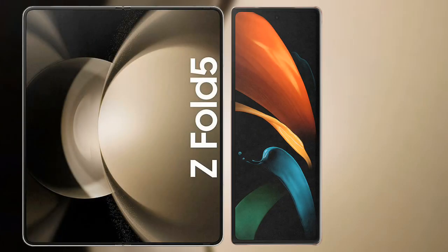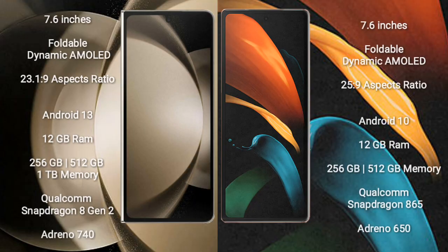Comparing the Samsung Galaxy Z Fold 5 with the Samsung Galaxy Z Fold 2. The Samsung Galaxy Z Fold 5 comes with a 7.6-inch foldable dynamic AMOLED display with an aspect ratio of 23.1:9. The Samsung Galaxy Z Fold 2 comes with a 7.6-inch foldable dynamic AMOLED display with an aspect ratio of 25:9.